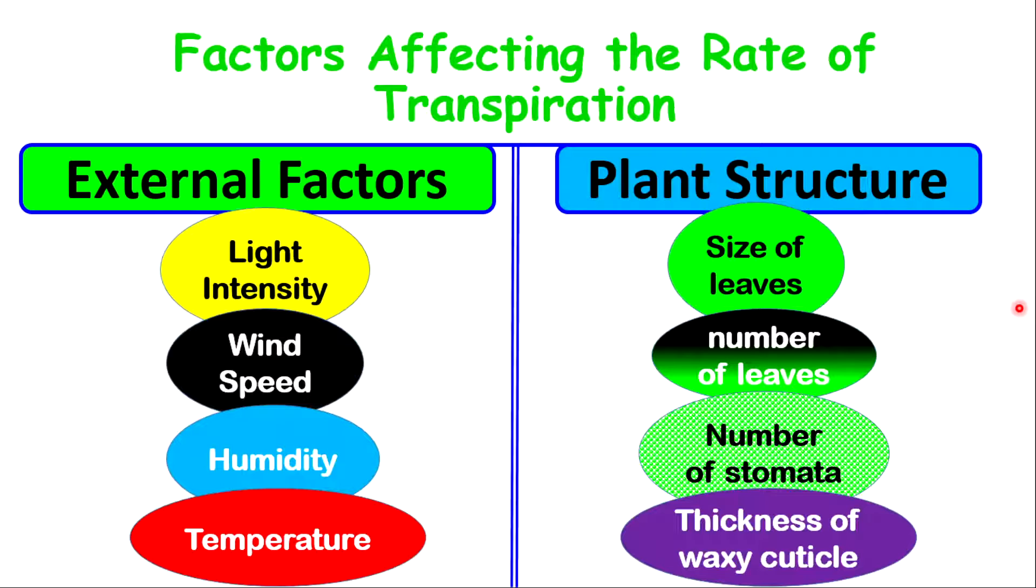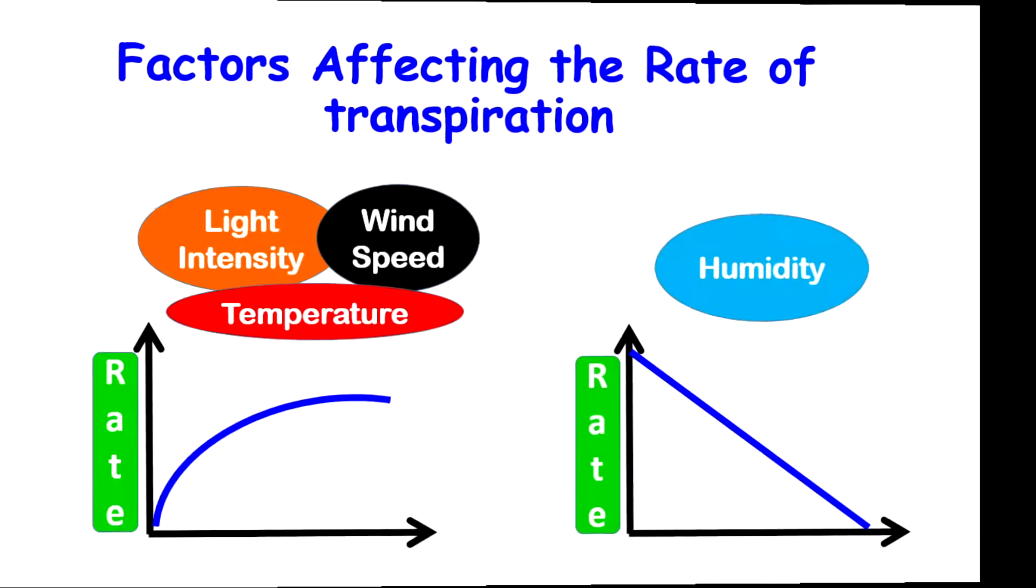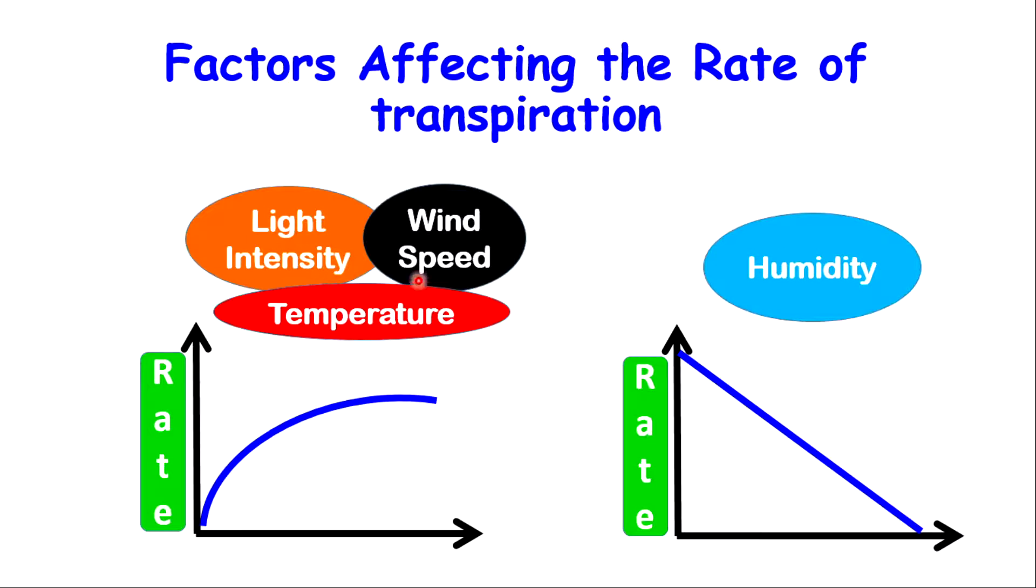Let's look at the external factors in a graphical sense. Light intensity, wind speed, and temperature will affect the rate of transpiration in a similar way. As they increase, the rate of transpiration will also increase to that maximum, which we call a threshold. And once these are at a high level, then that high rate of transpiration will be maintained. However, humidity is different. As humidity increases, the rate of transpiration will decrease. So, humidity and the rate of transpiration are inversely proportional.